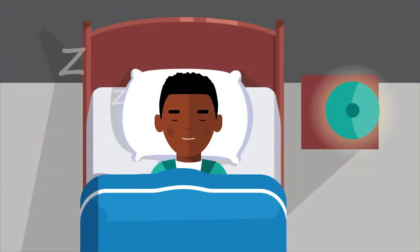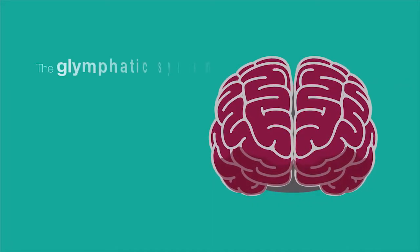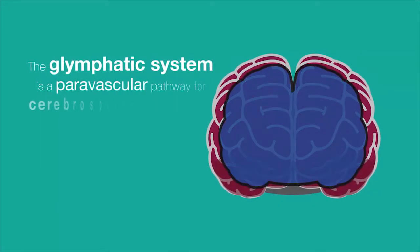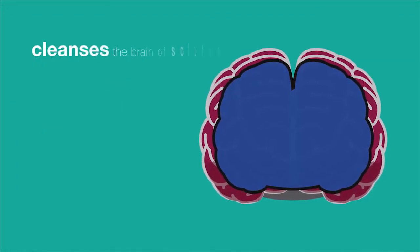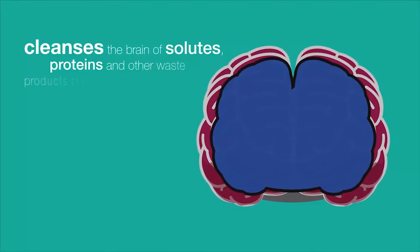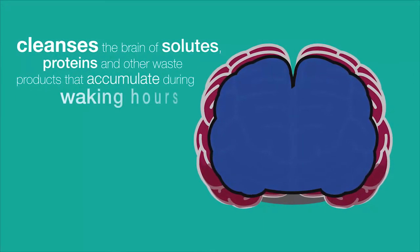When we sleep, the brain's glymphatic system is activated. The glymphatic system is a perivascular pathway for cerebrospinal fluid and interstitial fluid exchange, which cleanses the brain of solutes, proteins, and other waste products that accumulate during waking hours.